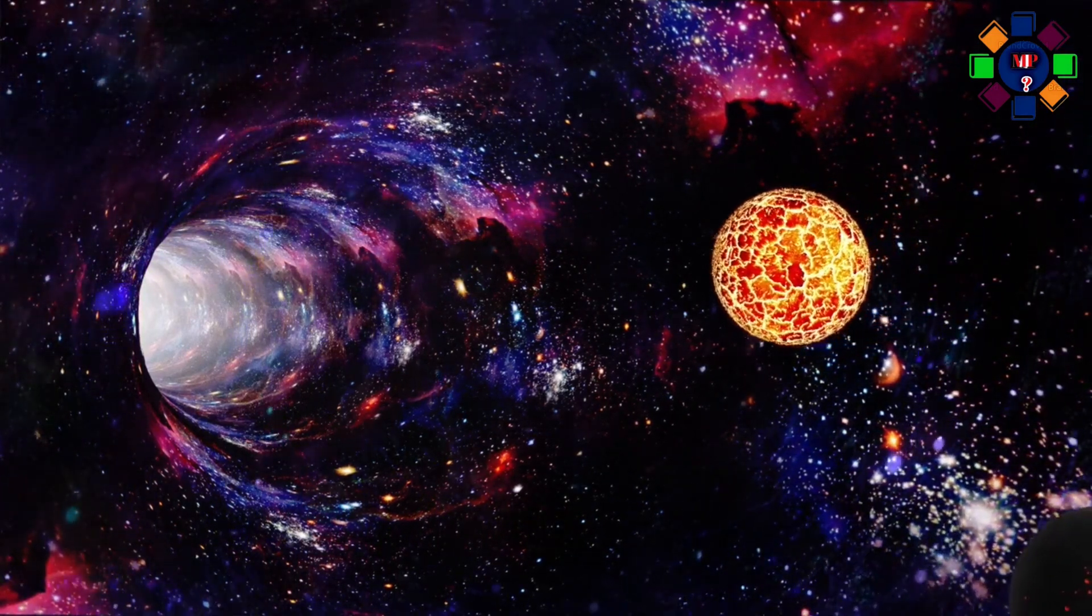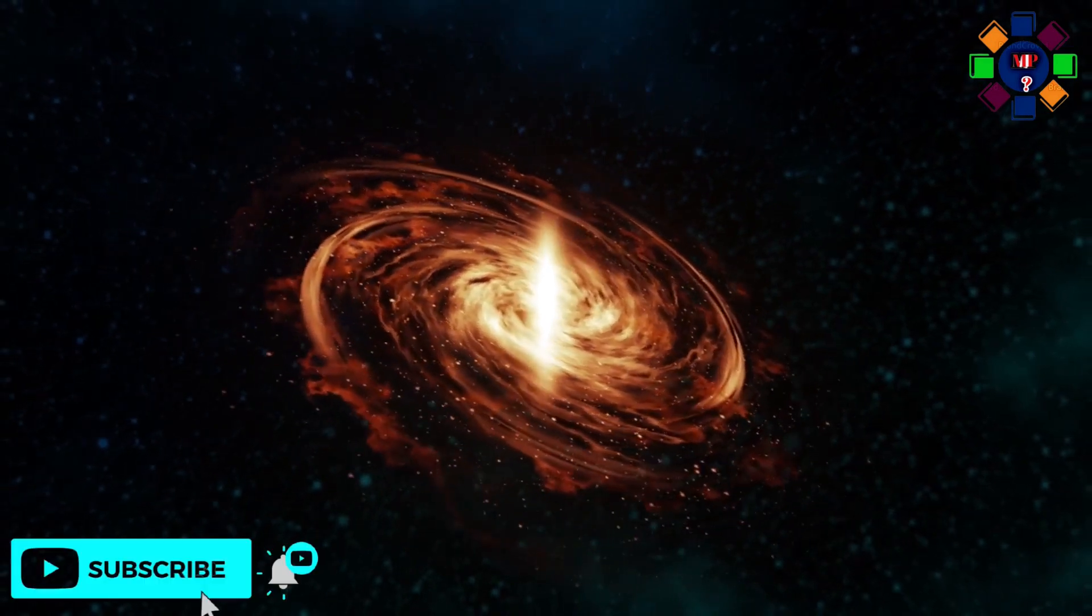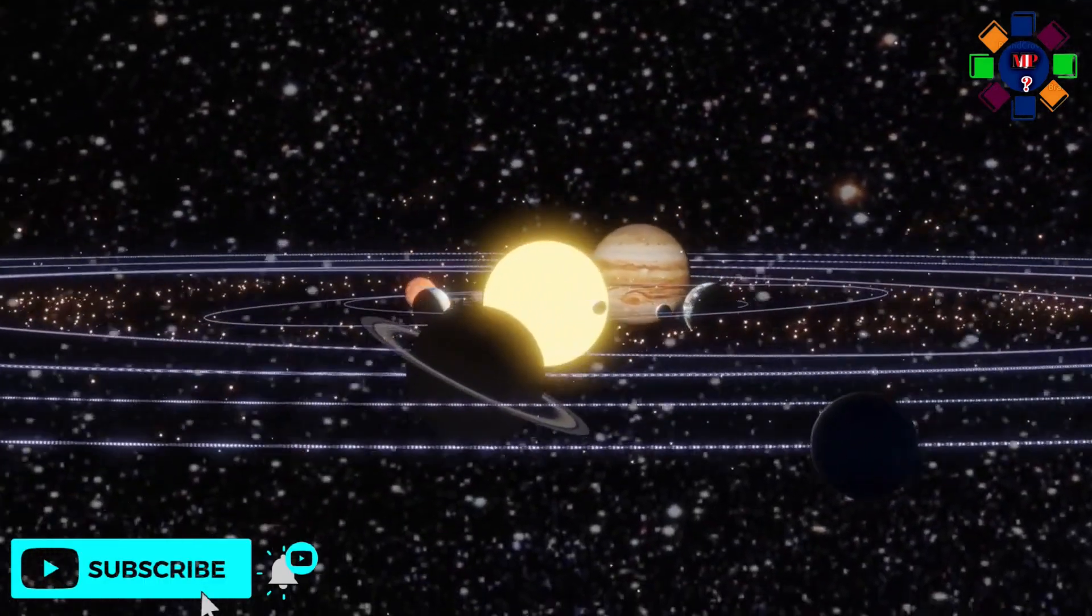We know that the sun, along with the entire solar system, moves through space at a speed of 19.2 kilometers per second, in addition to its rotation.